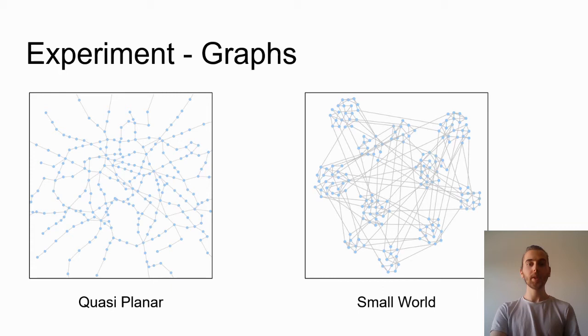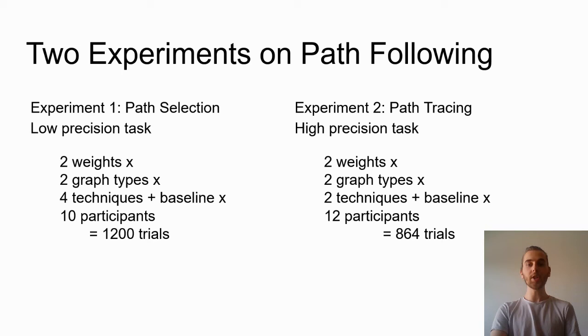We also test two graphs in our experiments, as topology may play a role in performance. They are a quasi-planar graph that matches our metro scenario, and a small world graph to see if the results of the techniques can be generalized to other graphs. In each of the two experiments, we compared our AR techniques against a baseline condition of choosing no technique, just the simple AR headset cursor.